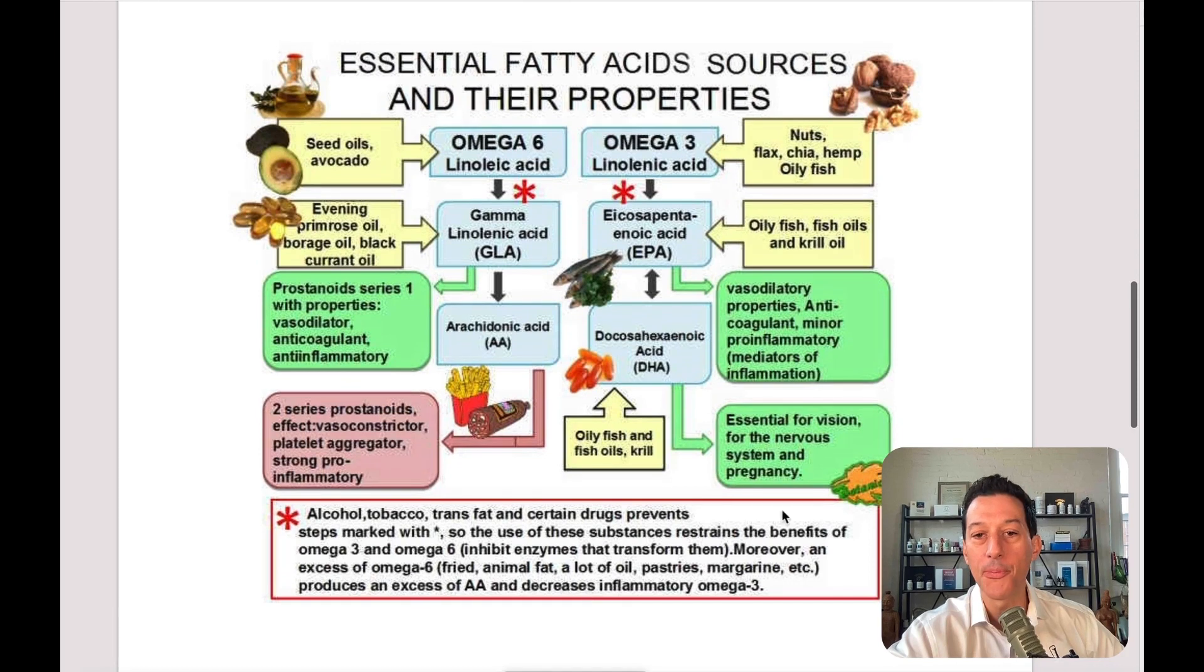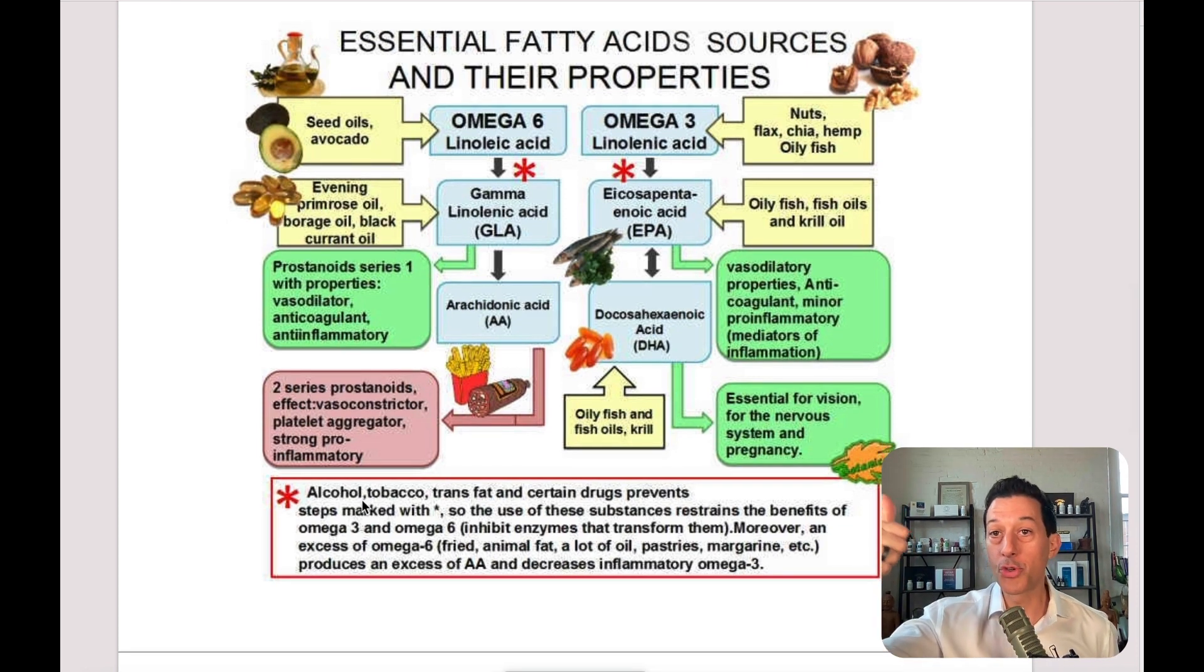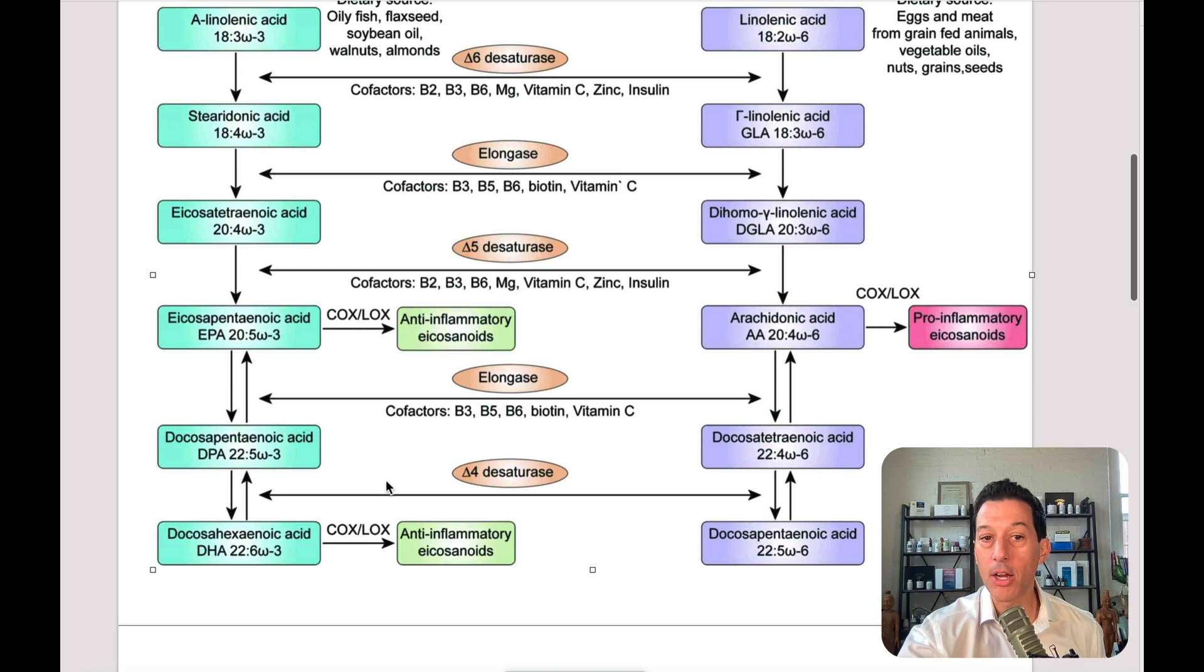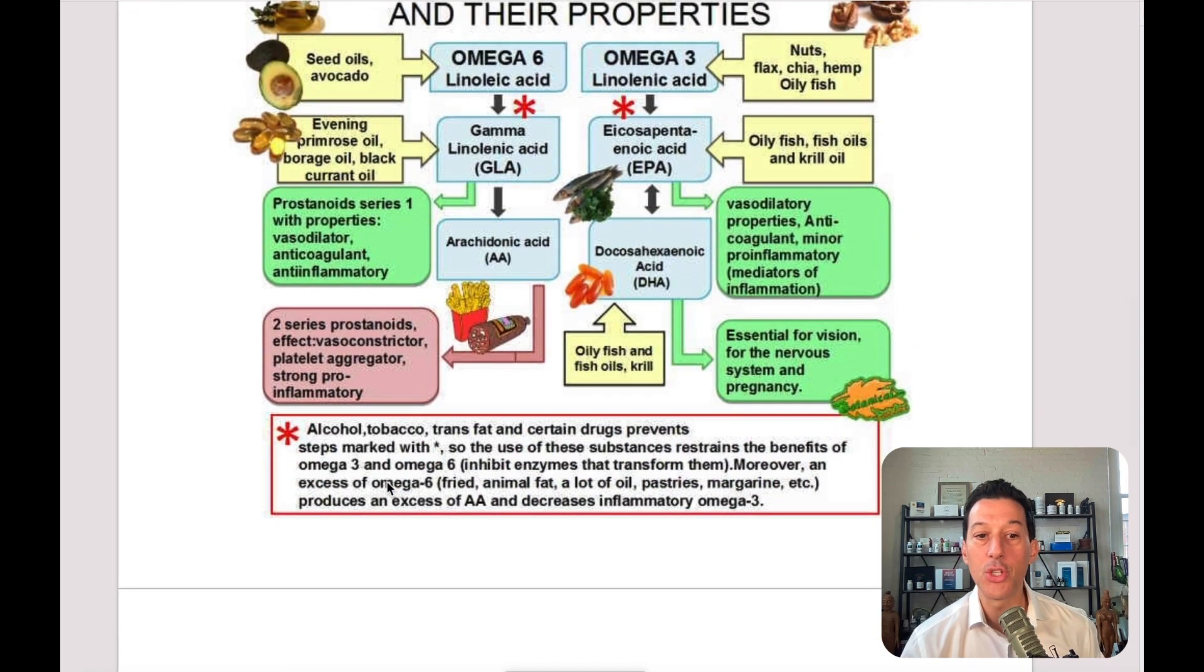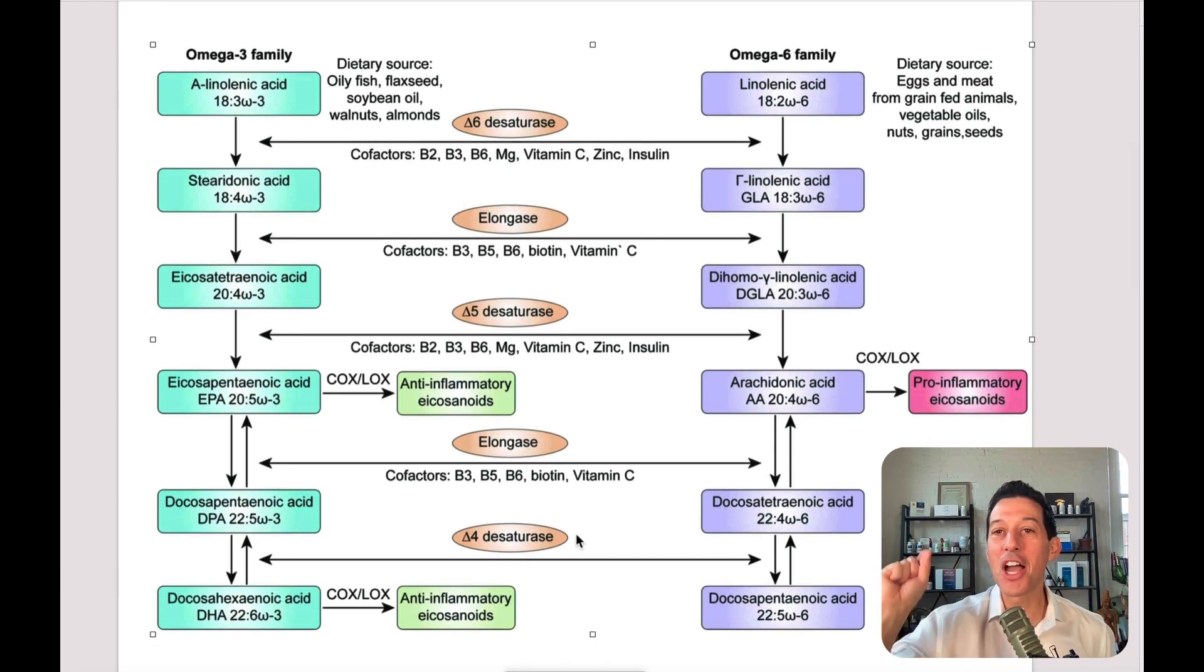One more chart. Now we've got switch—omega-6 is on this side, omega-3 is on this side. It's all exactly the same, flowing down to GLA. We want more of that—evening primrose oil, black currant. Very infrequently do we do that in our practice because you can get them from other things. But you get your EPA, your DHA. Why am I showing you this chart? Because of this right down here: alcohol, drinking alcohol, smoking in general, eating trans fats, and certain drugs prevent these steps from transforming into the usable omega-3s. It inhibits the enzymes that transform them.